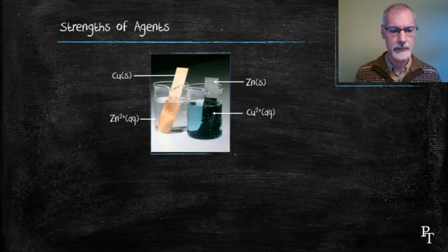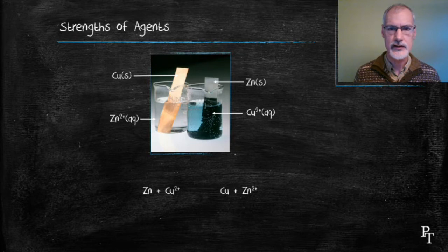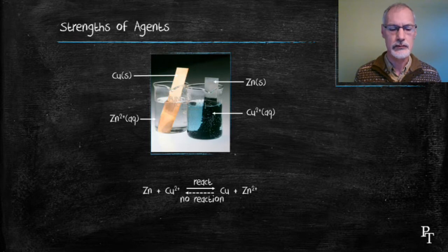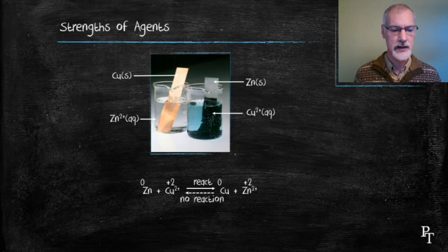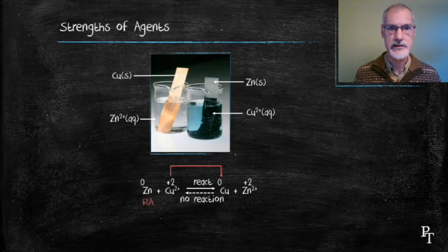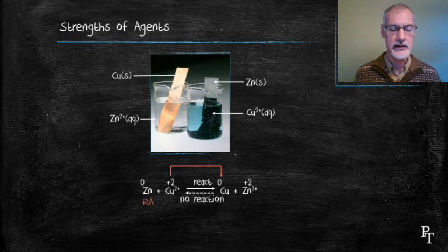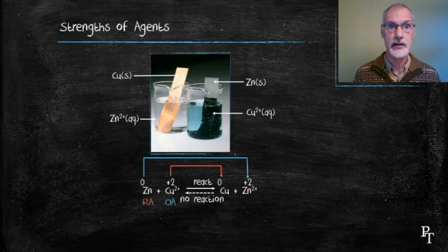Let's summarize the ions. Showing this as an equilibrium arrow: in the forward direction, zinc and the copper solution react, but in the reverse reaction we get essentially no reaction. Looking at oxidation states: the copper ion has gained two electrons, so copper has been reduced. The reducing agent is the metal zinc. Similarly, zinc has lost two electrons, so zinc has been oxidized, and the cause is the copper ion.